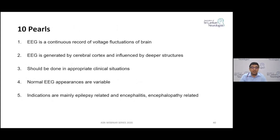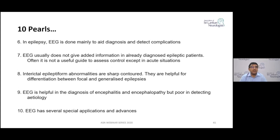In summary, the 10 key points are: EEG records brain electrical activity from the cerebral cortex; it should be done for appropriate clinical situations; normal appearances vary based on physiological factors; indications are epilepsy-related conditions and encephalitis or encephalopathy; the do's and don'ts of EEG in epilepsy have been discussed; EEG changes in epilepsy include spikes and sharp waves; EEG changes in non-epileptic cortical disorders have been reviewed; and special applications include video EEG, sleep studies, ICU monitoring, and electrocorticography.